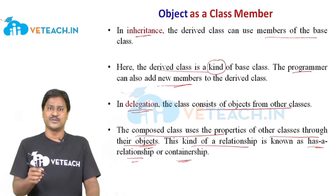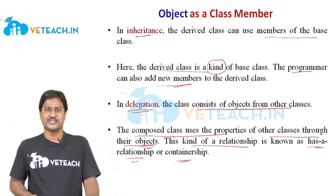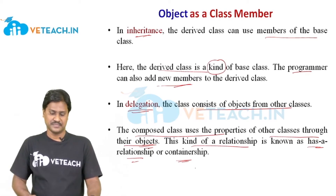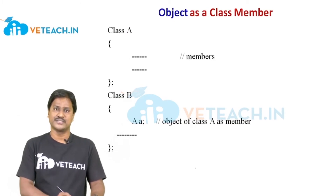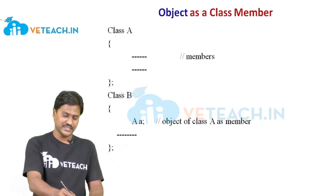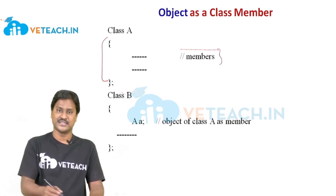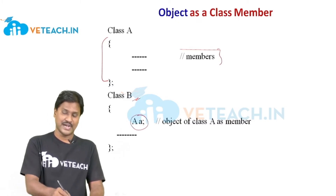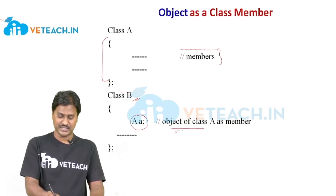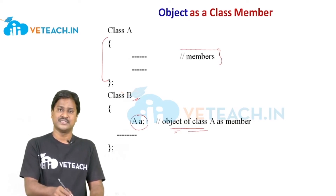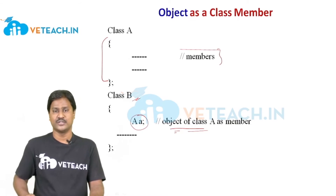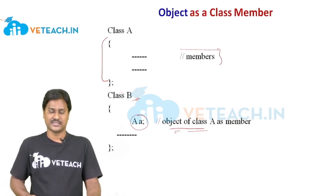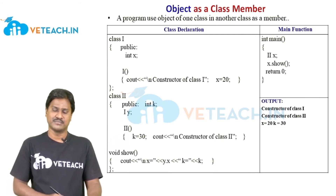The delegation property applies a 'has-a' kind of relationship, which is why we call the applying classes container classes. To illustrate with an example: I have class A with some members defined inside it, and class B in the same program. I can use class A's object as a member inside class B. This concept — defining an object as a member of another class — works in real-time programs where we can declare multiple classes.